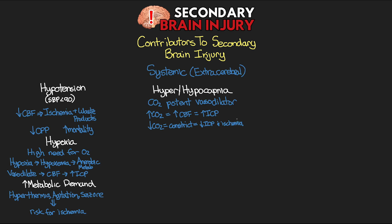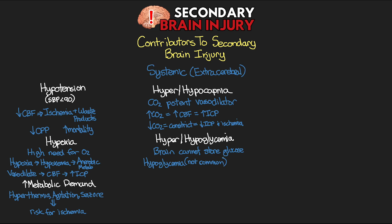As you can see, there are consequences on both sides — whether CO2 is too high or too low — that are ultimately not going to be good for our patient. The next contributor is either hyper- or hypoglycemia. Our brain cannot store glucose and is fully dependent on the body's ability to provide it. While hypoglycemia isn't common in TBI patients, it can impact the cell's ability to function normally. Hyperglycemia is more common and is associated with adverse effects, although we're unsure if it's an indicator of injury or an actual contributor.